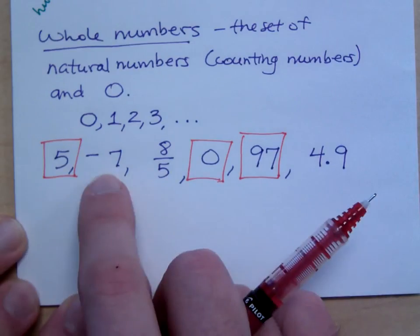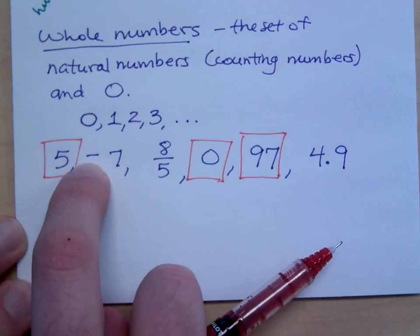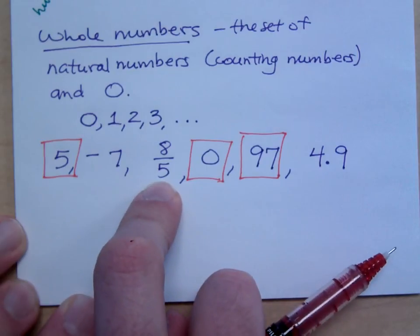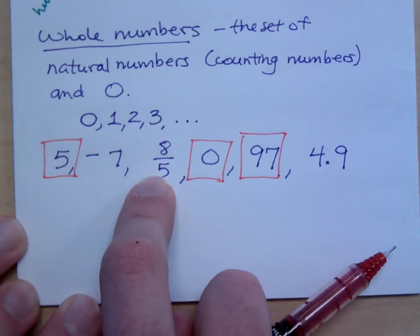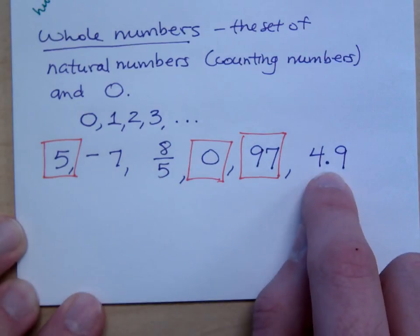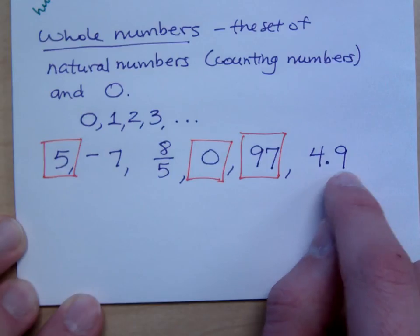Now, what we're going to see later on is that negative 7 almost looks like a whole number, but it's got the negative sign. This is called an integer. 8 fifths, although you see it's kind of made up of whole numbers, this is called a rational number. 4.9 is a decimal that ends at the 9, so this is also considered a rational number. But we'll talk more about those guys as the season progresses.